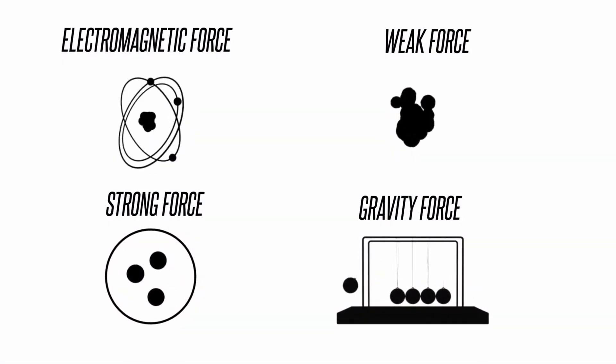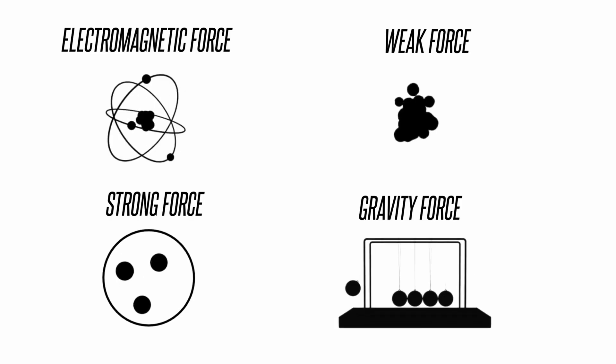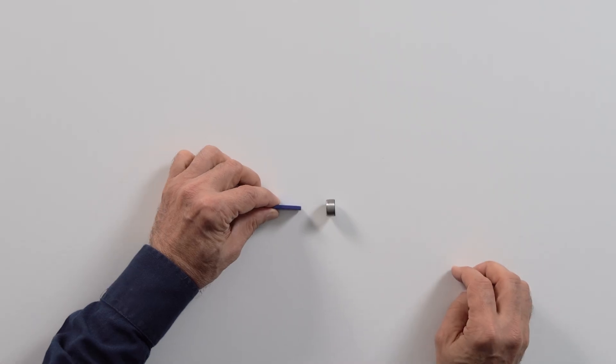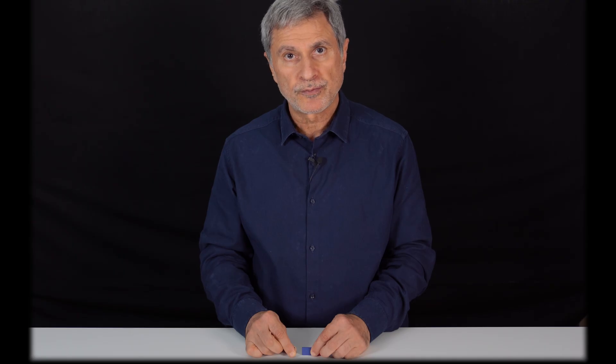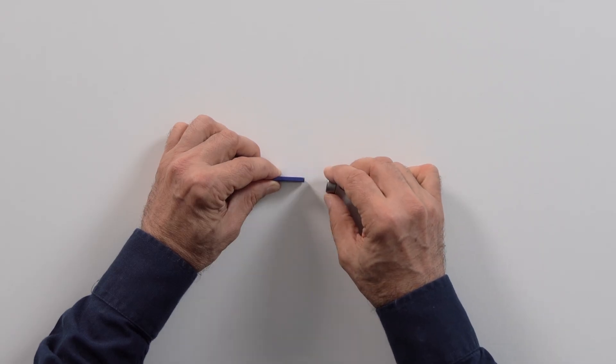Invisible forces. The first is the electromagnetic force. This metal object attracts towards the magnet. I don't see anything. This is the name of the force that I cannot see, electromagnetic force. We don't see it, but it's there.